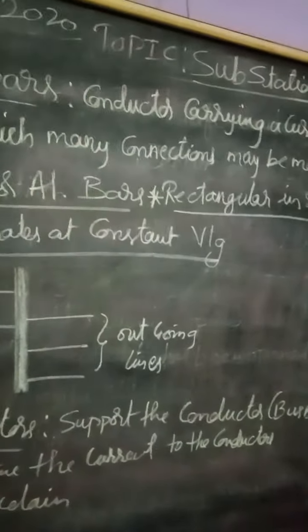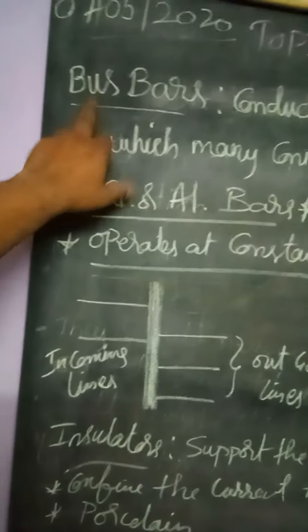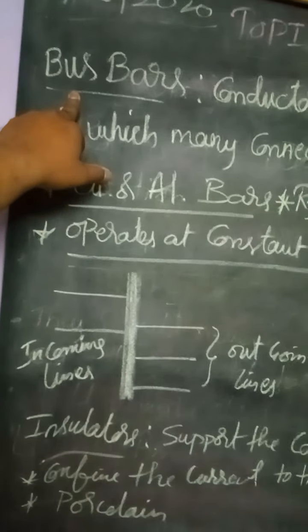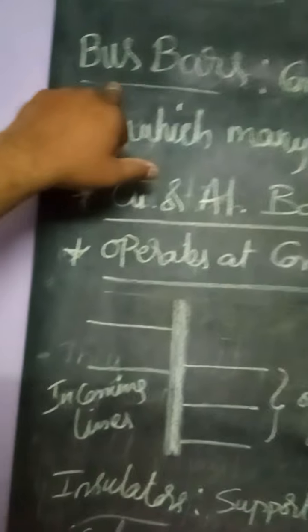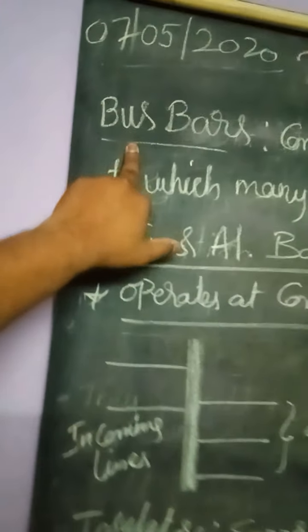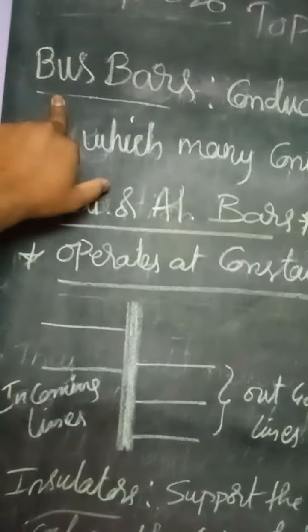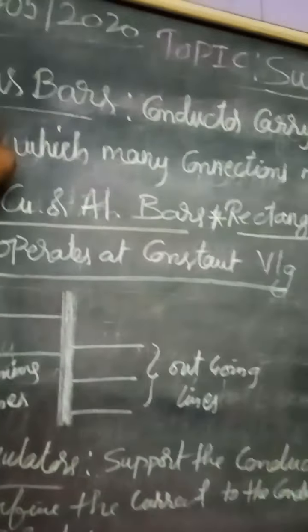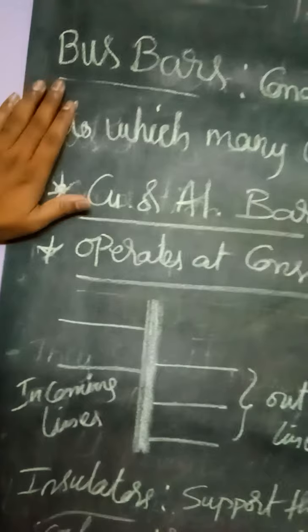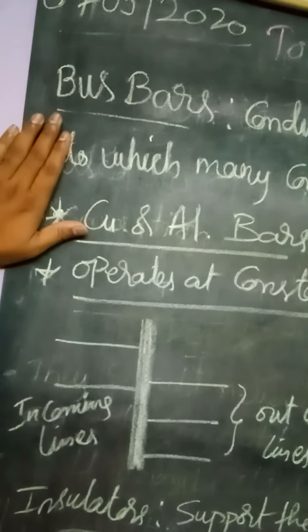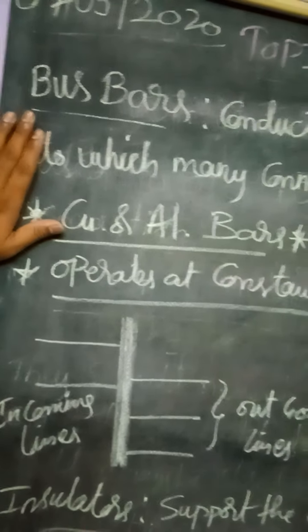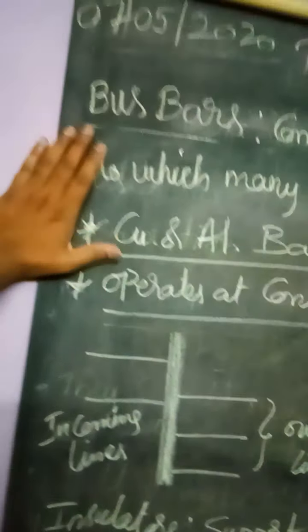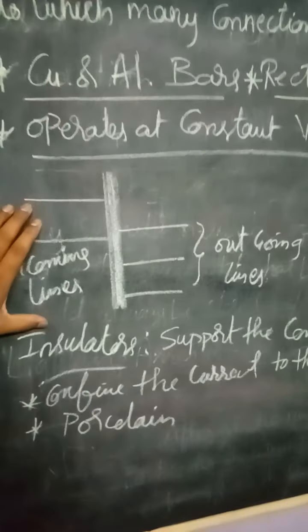Bus bars are made up of copper or aluminium bars. The word 'bus' is similar to a transportation bus — we fill a number of people into it and make it move. Similarly here, a number of currents will be flowing into the bus bar conductor.